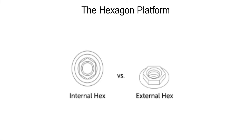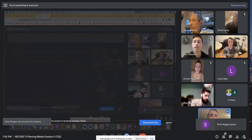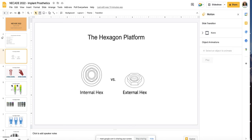The first thing I want to talk about is implant platform design. On the right side we see the external hex and on the left we see the internal hex. The external hex was the primary platform developed by the early implants in the 70s, 80s, and 90s — at least the cylindrical implants. That was the most popular implant right up until the internal hex came out. The internal hex has some advantages and was the leader of implant platform design before about 2005.